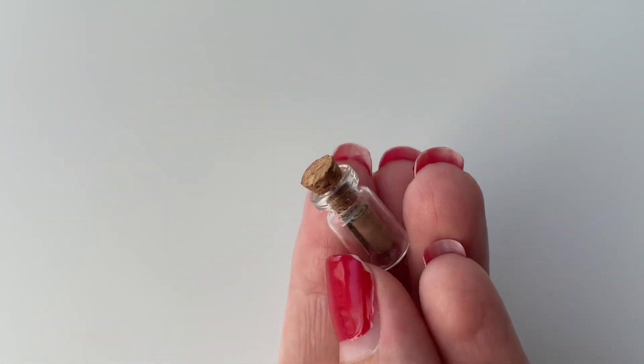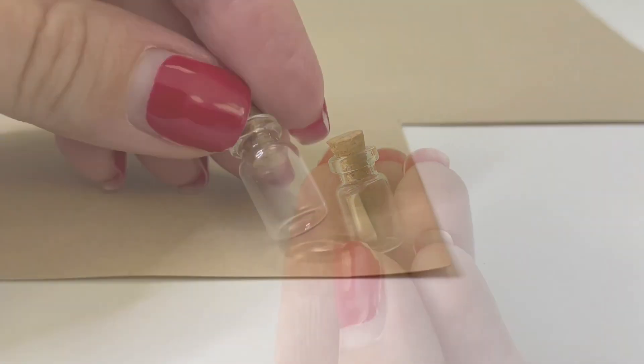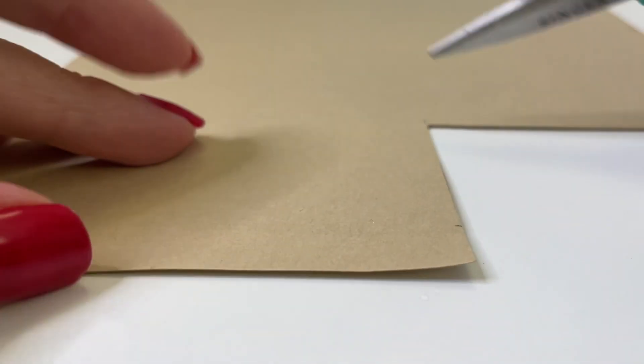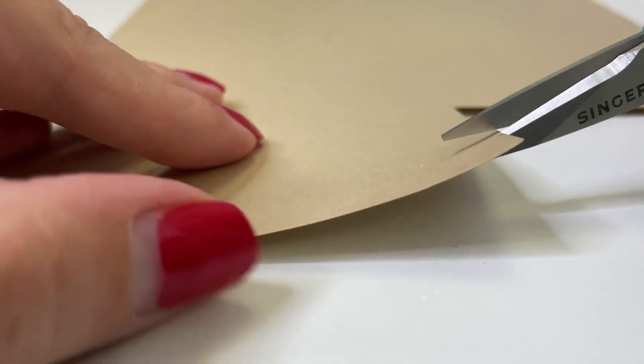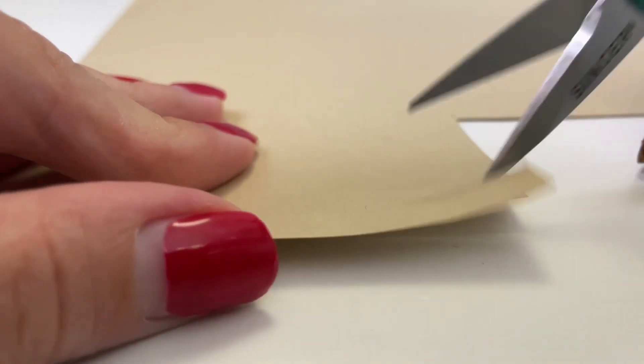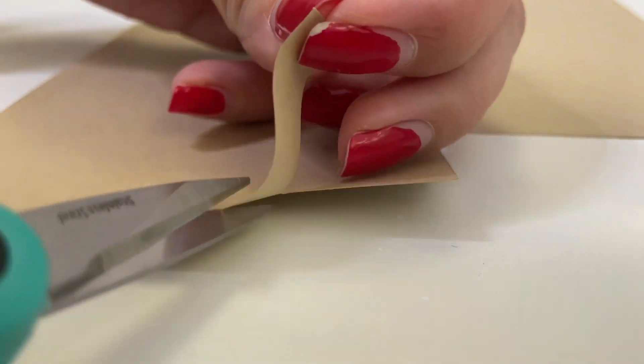And next I am going to make this little message in a bottle. So I'm just grabbing some tan colored paper and I'm just going to measure it out to see how big it needs to be to fit in my bottle. And that's the size of the paper that I'm going to cut. And I'm just going to cut a long strip and this is going to be rolled up later.